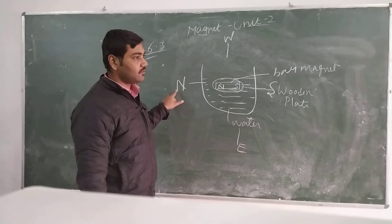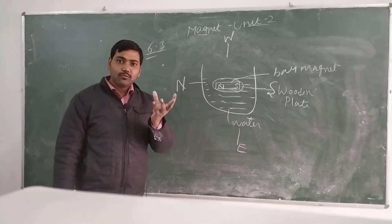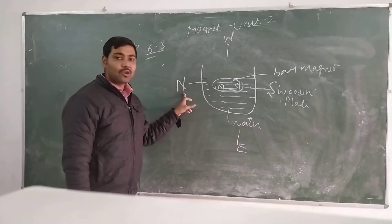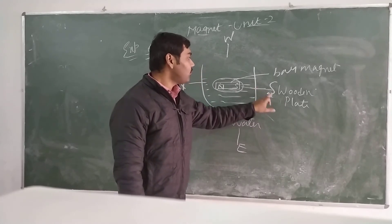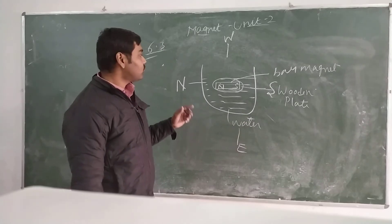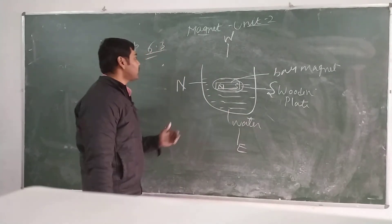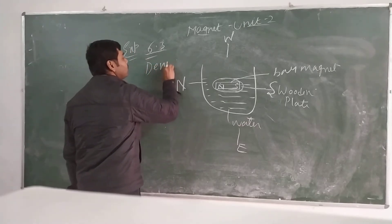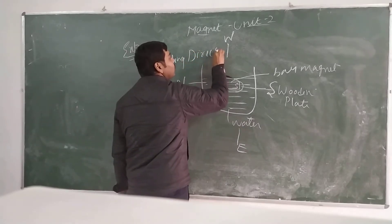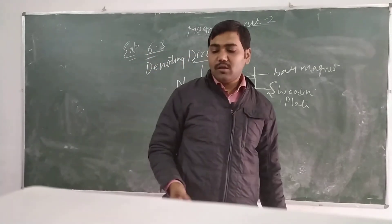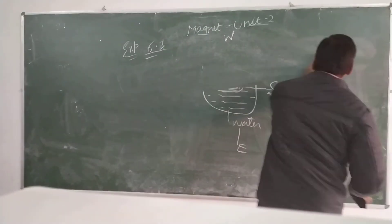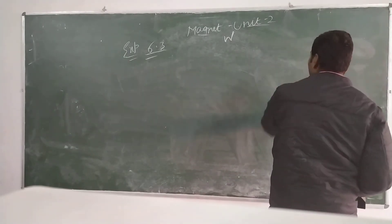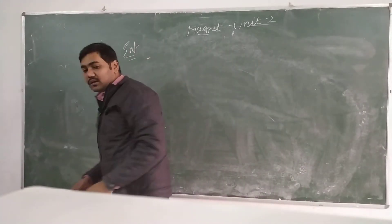After settling, the north pole of the magnet always points towards geographic north and the south pole always points towards geographic south. This indicates directions. This experiment proves that the magnetic needle always points towards north-south direction and does not point in any other direction.